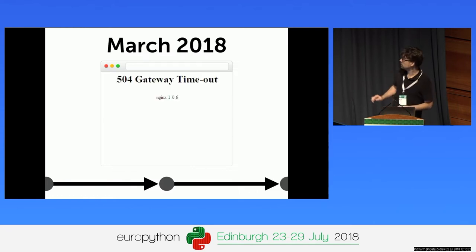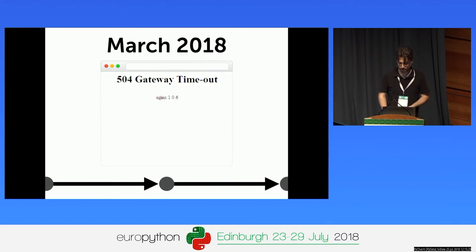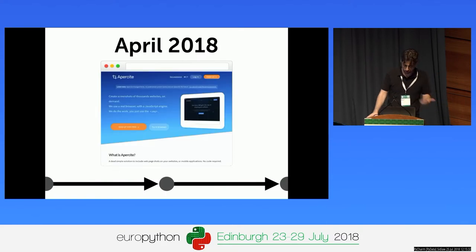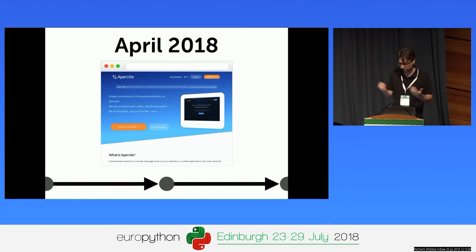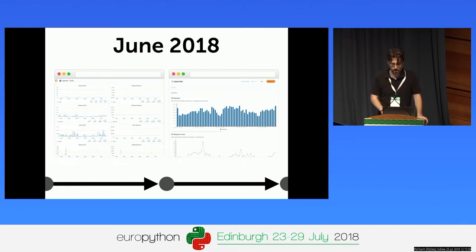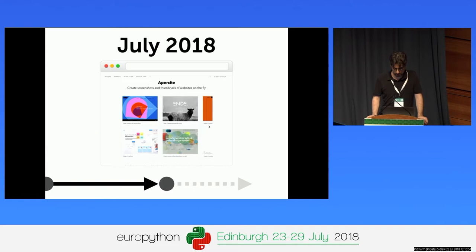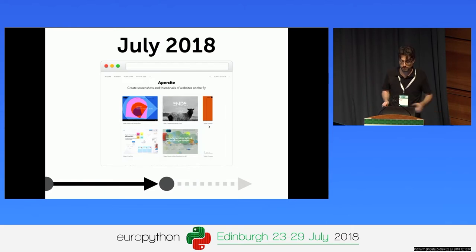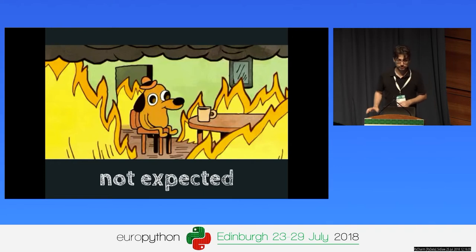At that point I called him and we agreed on me taking over the service with a brand new version. In March he started to send me his traffic — I didn't think he had that much traffic, so I started serving gateway timeouts. But after a lot of work I could serve the new version of the website, which was no longer PHP — all Python.